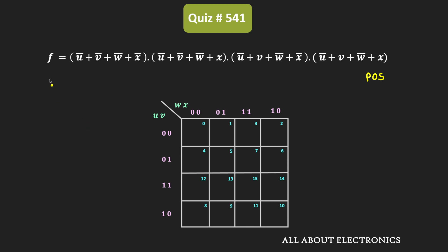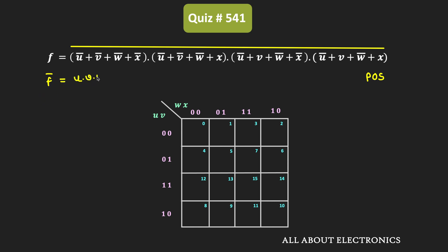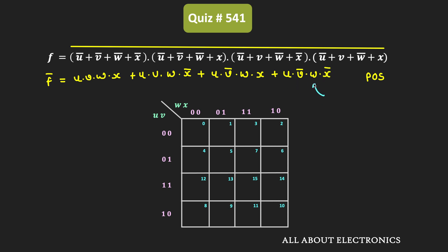First, let us find F-bar by using De Morgan's law. If we take the bar of the entire function, we get F-bar, which equals u·v·w·x + u·v·w·x̄ + u·v̄·w·x + u·v̄·w·x̄. As you can see, F-bar is now in the SOP form.